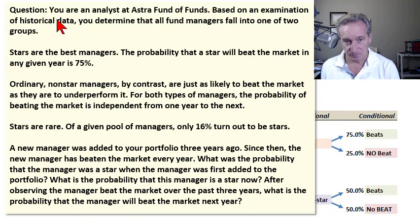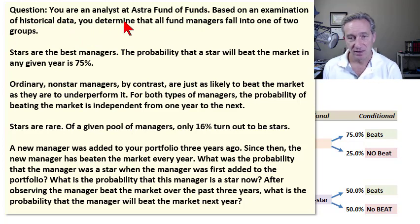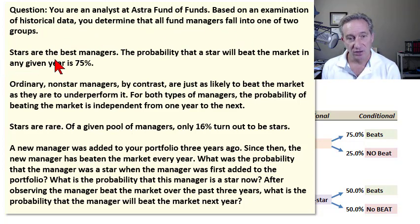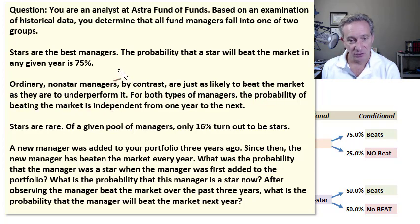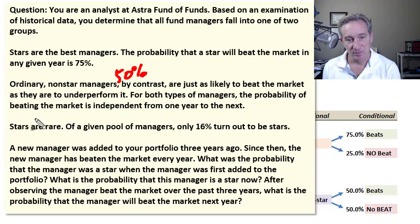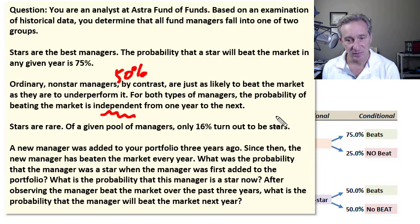The question is as follows: you're an analyst at Astra Funds of Funds. Based on an examination of historical data, you determine that all fund managers fall into one of two groups. Stars are the best managers — the probability that a star will beat the market in any given year is 75%. That's the first assumption. Non-star managers, by contrast, are just as likely to beat the market as to underperform it, giving them a 50% probability of beating the market. That's the second assumption. Stars are rare — of any given pool of managers, only 16% turn out to be stars.